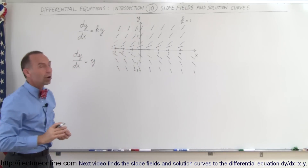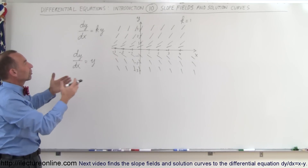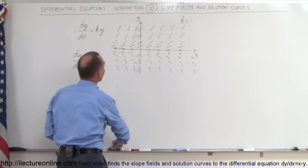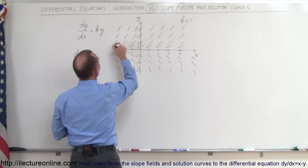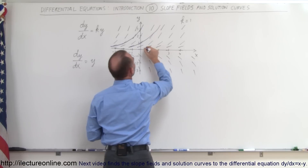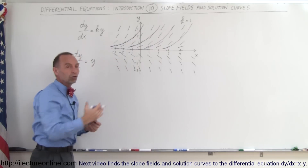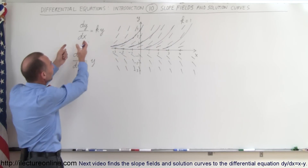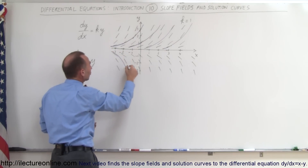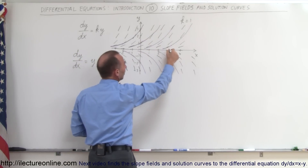Now what we have is what we call a slope field that shows you what the function would look like if we were to place it somewhere on the xy plane — assuming in this case that k is equal to 1. If I want to draw the solution right here, that's what the solution would look like. If I draw it right here, that's what the solution would look like. Over here, the solution would look like this. All I have to do is follow the slope field and it shows me what the solution to the differential equation would look like. On the negative side, this is a possible solution, this is a possible solution, that's a possible solution — these are all possible solutions.